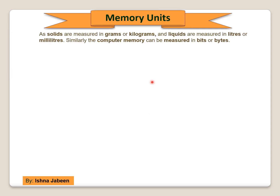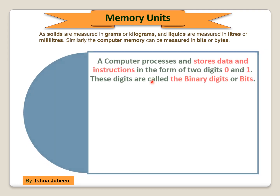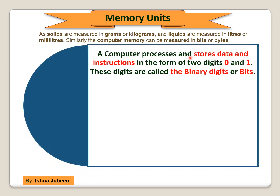Memory units. Just like solids are measured in grams or kilograms and liquids are measured in liters or milliliters, similarly the computer memory can be measured in bits or bytes. A computer processes and stores data and instructions in the form of two digits, 0 and 1. These digits are called the binary digits or bits.